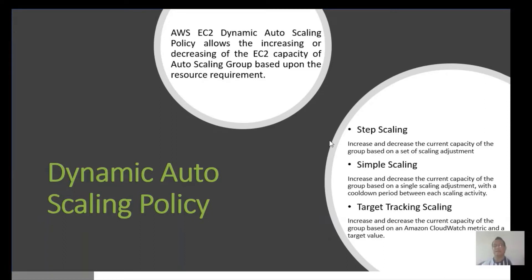In dynamic auto scaling, the first way is step scaling. In step scaling we use multiple steps to increase EC2 instances — for example, when resource utilization reaches a threshold, add two instances; when it reaches another threshold, add two more. The reverse also happens for scaling in. In simple scaling you have only one single scaling adjustment, while in step scaling you can use multiple. Simple scaling also has a cooldown period between each scaling activity.